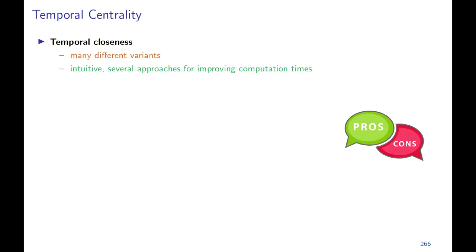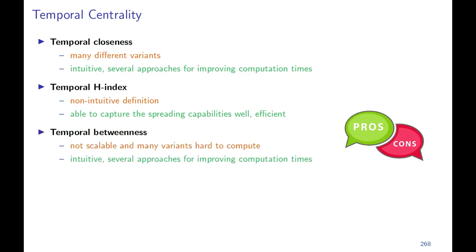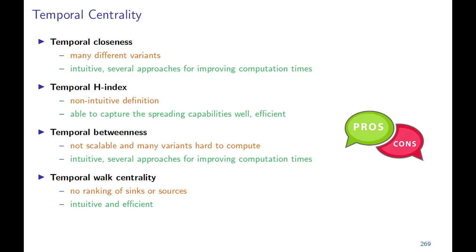Comparing the centrality measures: temporal closeness has many different variants, is intuitive, and there are several approaches for improving computation times like approximation algorithms. The temporal H-index has a less intuitive definition, but captures spreading capabilities well and efficiently. Temporal betweenness centrality is not very scalable and many of its variants are even hard to compute, but it's intuitive and there's a wide range of approaches including approximation algorithms. Temporal walk centrality has the disadvantage that we cannot rank sinks or sources since sinks have no outgoing walks and sources have no incoming walks, but it's intuitive and efficient to compute. Choosing the right centrality measure always depends on the data and the use case.